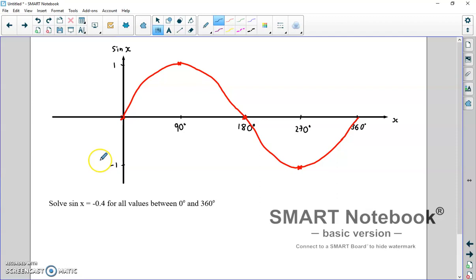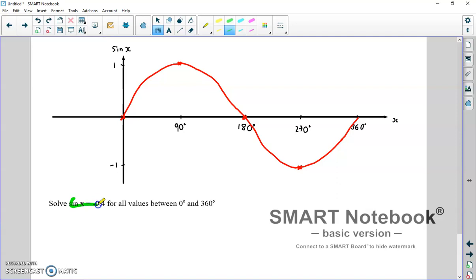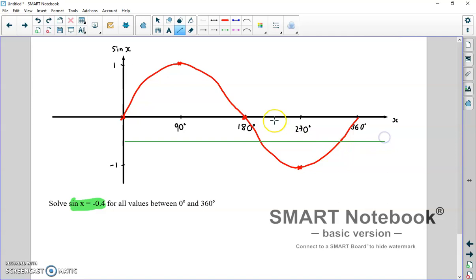Sine again on this second question, but the big difference on this question is that we've been asked to find all of the solutions for sine x equals minus 0.4 down here. Minus 0.4. If I start this one like I started the last question, so let's get a line up. If I find roughly where minus 0.4 is, which is there, you can see that again there are two solutions. We've got one here, and we've got one here.